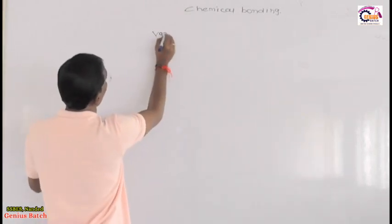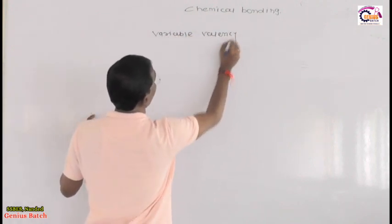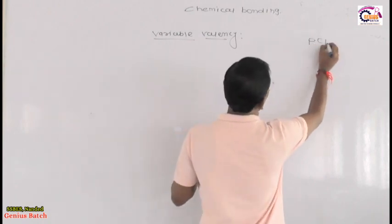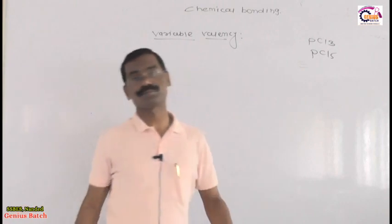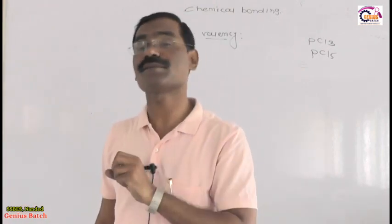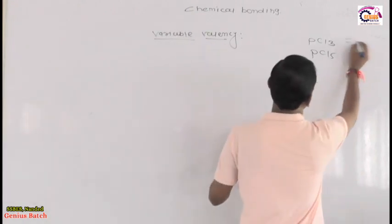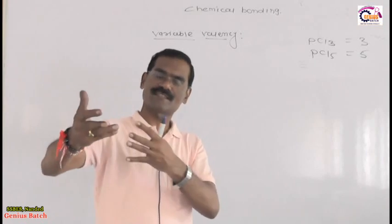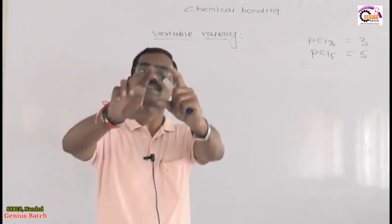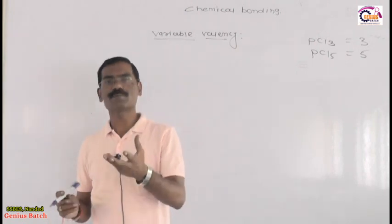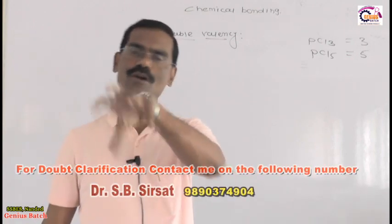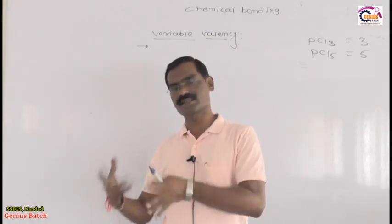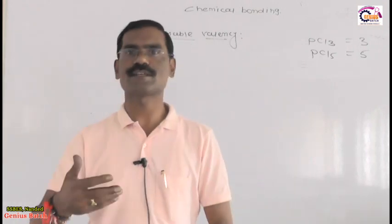The next concept is variable valency. For example, phosphorus forms PCl₃ as well as PCl₅. Phosphorus should have one fixed covalency, yet PCl₅ also exists — so the valency is 3 in one compound and 5 in another. When an element shows different valencies in different compounds, such valency is called variable valency. We will discuss which elements strongly show variable valency in the next videos. Thank you very much.